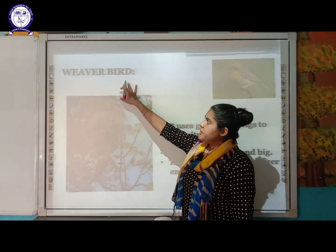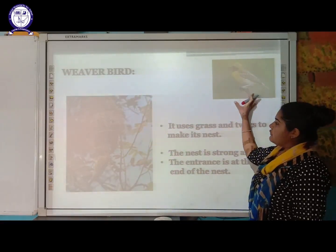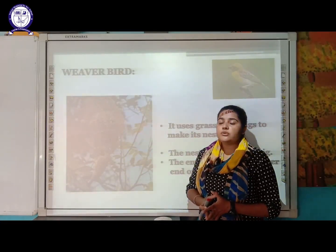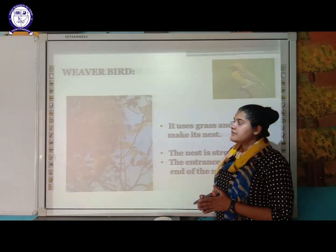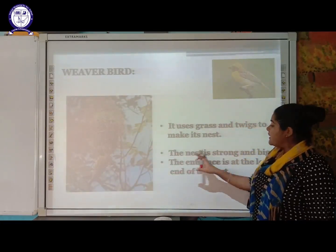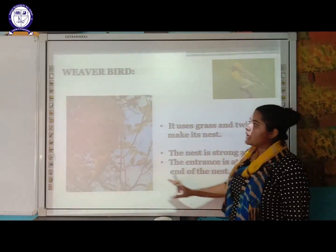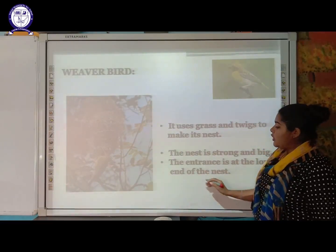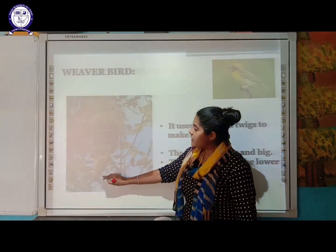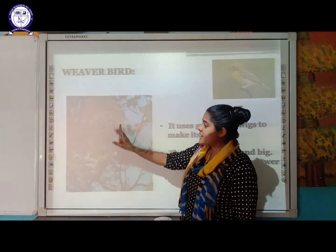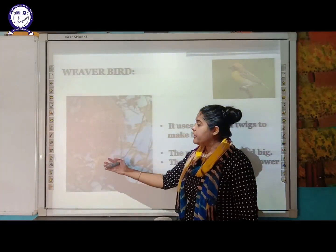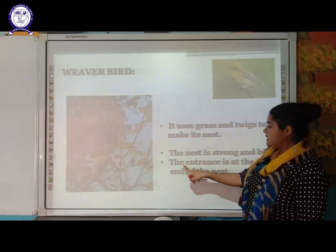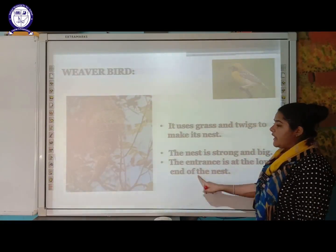Weaver birds use grass and twigs to make their nest. The special feature of this nest is that it is very strong and big inside. The entrance is at the lower end of the nest — as you can see in the diagram, the weaver bird enters from the bottom side.